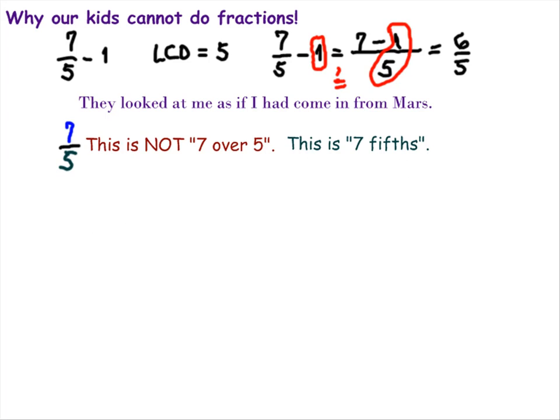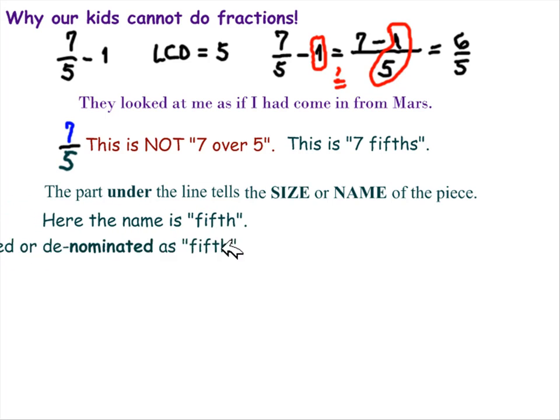I said, the part under the line tells the size or the name of the piece. Here it is named a fifth. We have denominated it as a fifth. We've named it as a fifth. This is not a 5. This is a fifth.